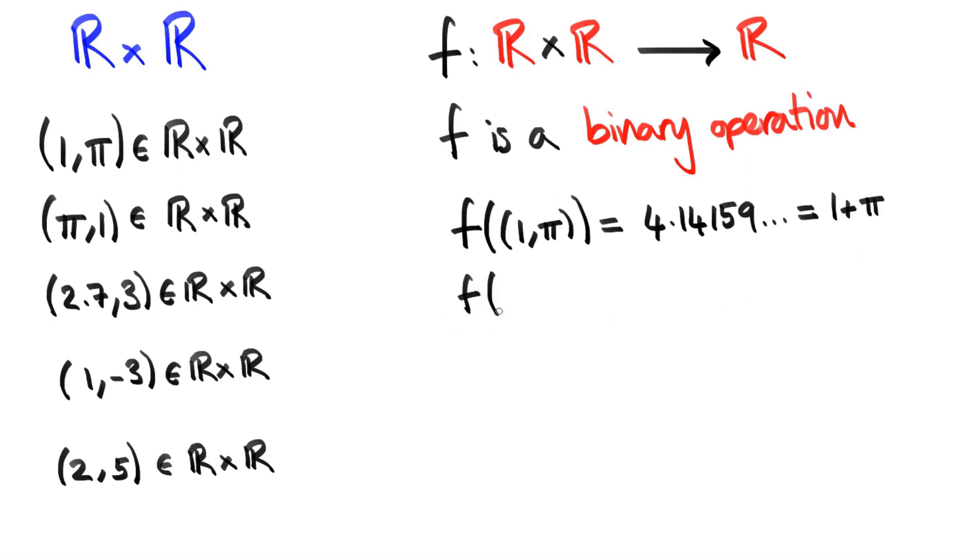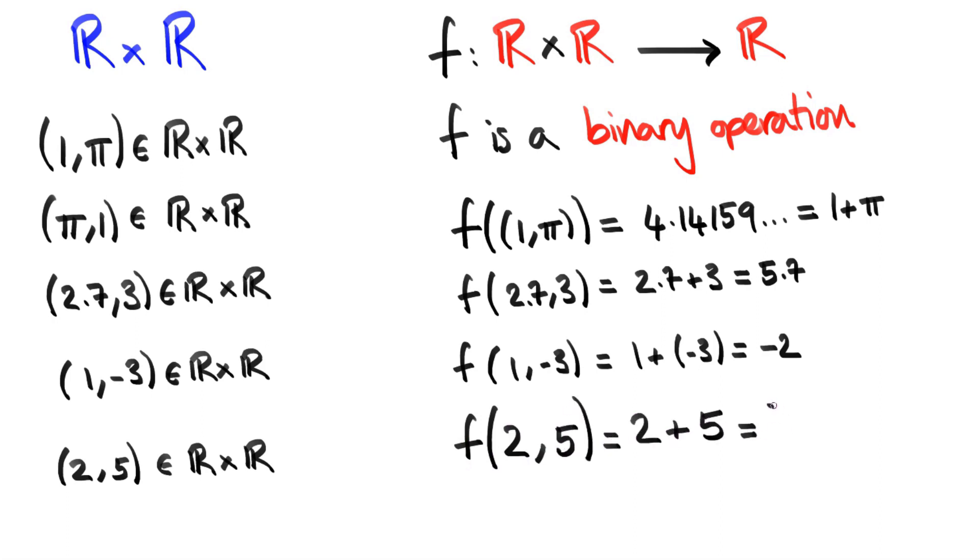f of pi and 1 is going to be exactly the same thing. Let's have a look at the next pair of elements. That's going to be f of 2.7 and 3. And we've dropped the second set of brackets here because it's not really necessary. And so f of 2.7 and 3 is just equal to 2.7 plus 3, which is equal to 5.7. We also have f of 1 and minus 3. That's going to be equal to 1 plus minus 3, which is minus 2. So we're able to perform a subtraction as well here. And finally, f of 2 and 5. That's 2 plus 5, which is equal to 7. So there we have it. That's what the expression means. 2 plus 5 equals 7. We're taking the binary function f and we're applying it to the pair of numbers 2 and 5 and it's producing an output which is equal to 7.